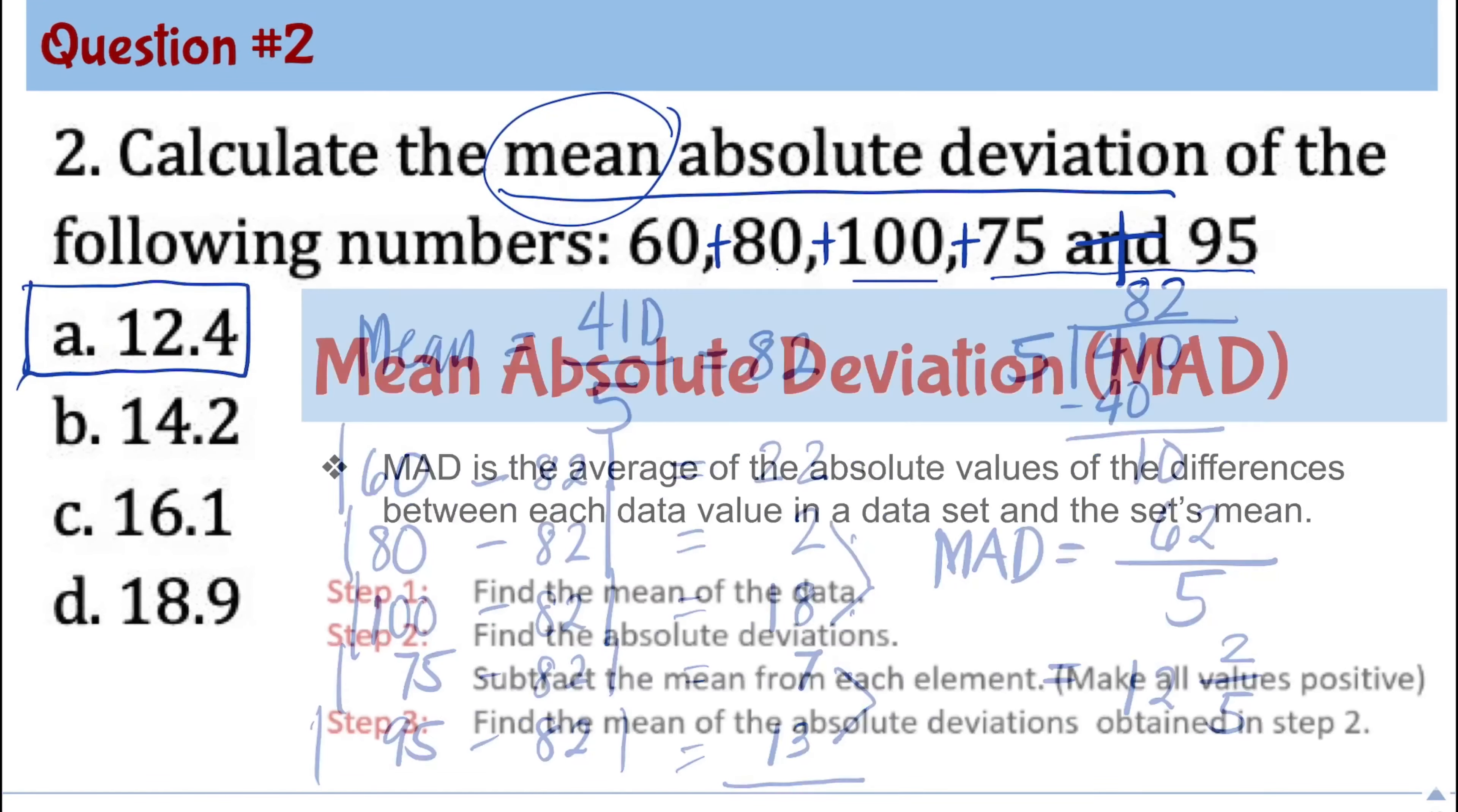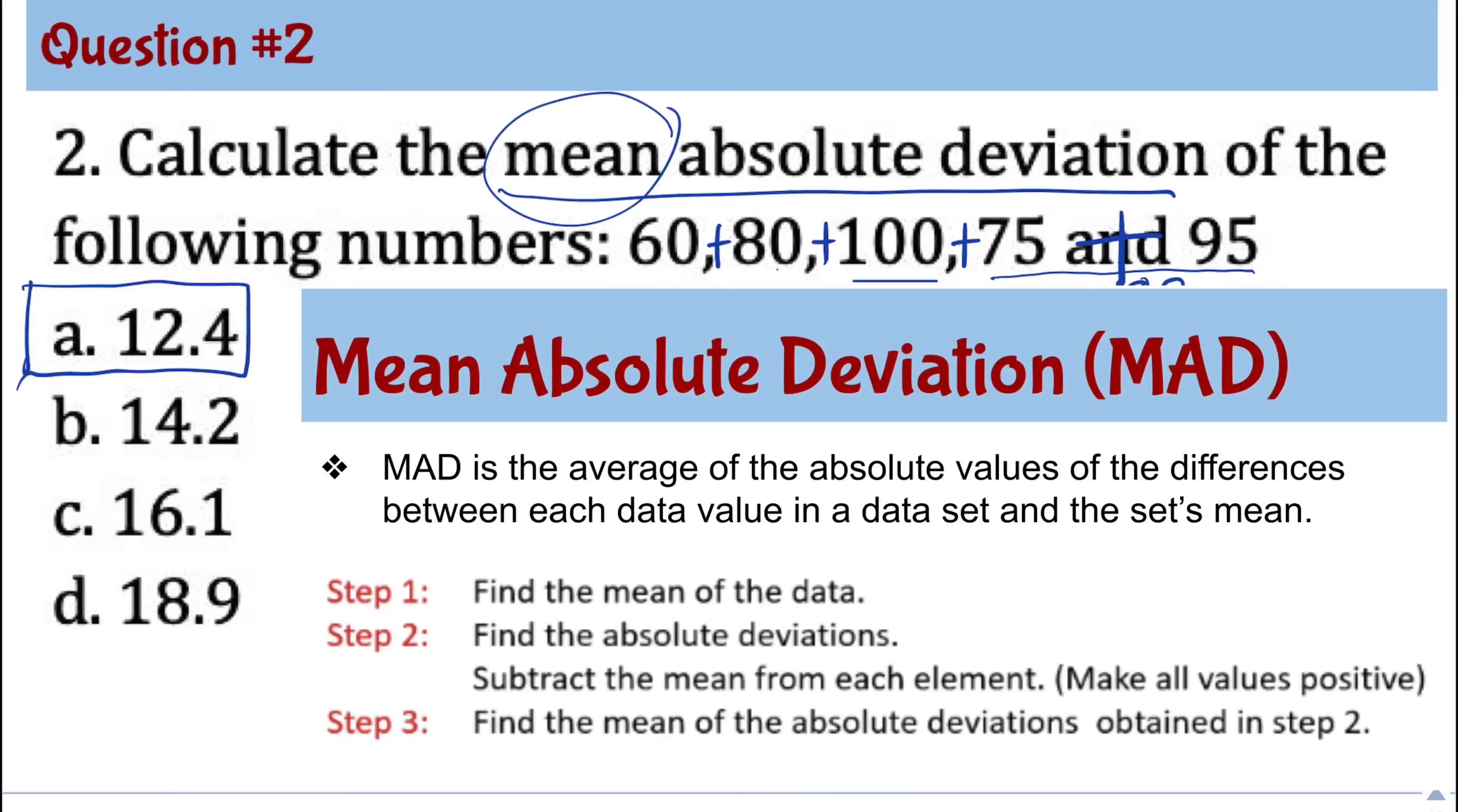Again, to calculate for the mean absolute deviation, it requires 3 steps. Step 1 is to calculate for the mean. Step 2, you need to find absolute deviations. Meaning you subtract the mean to each of the data, and then you take the absolute value. And number 3, you need to find the mean of the absolute deviations.